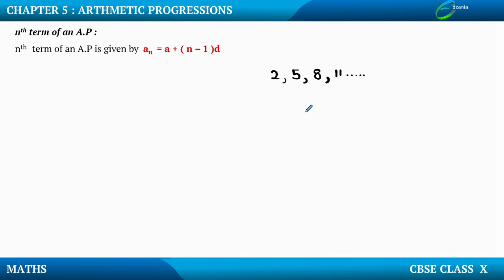Now in this case, if I ask you what is the first term, it will be easy for us to answer. The first term is denoted by a, and a is 2. If I ask you what is the common difference d, it can be easily calculated by a2 minus a1. So d = 5 minus 2, which is equal to 3.